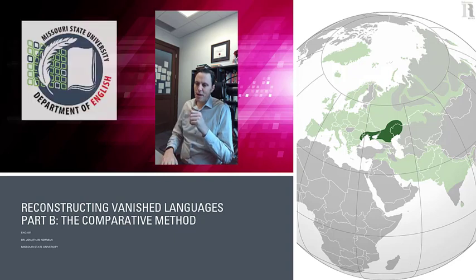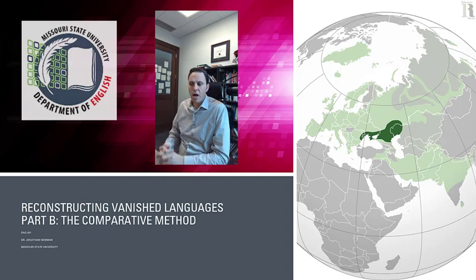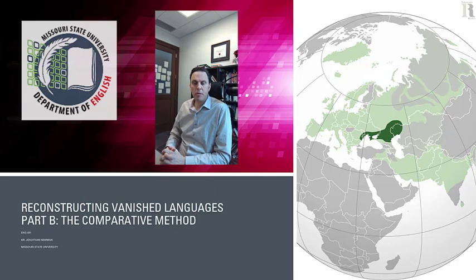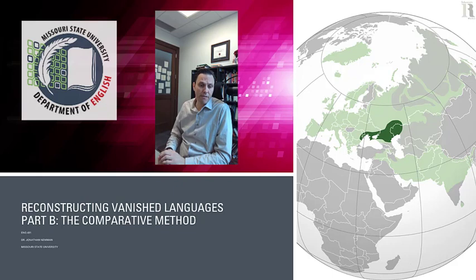The story I'm about to tell you is the story of the birth of a discipline — the discipline of historical linguistics — which begins in the late 1700s and flourishes in the 1800s, becoming one of the most important and influential fields of study in the 19th century. They called historical linguistics philology at the time, but it was really important to a lot of things, some good, some bad. I'm Dr. Newman. This is History of the English Language, and this is Reconstructing Vanished Languages, Part B: The Comparative Method.